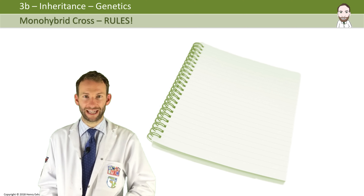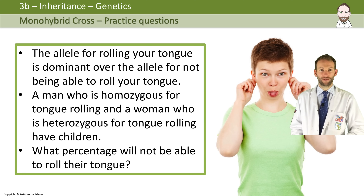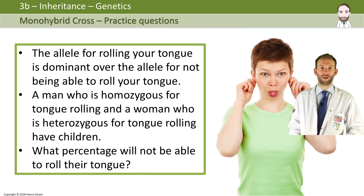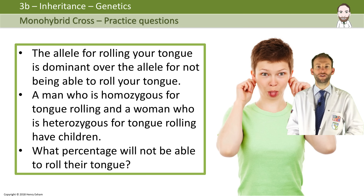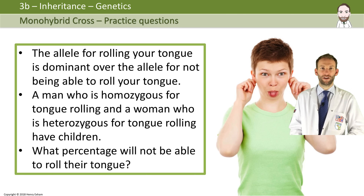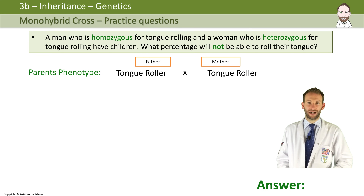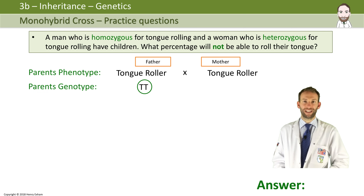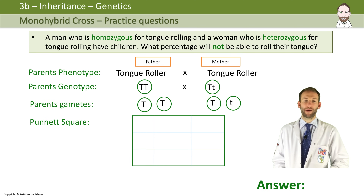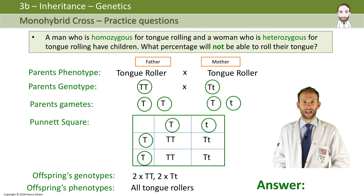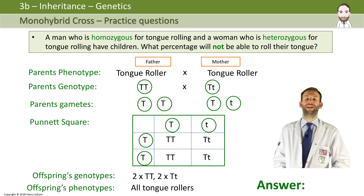Here's a practice question about tongue rolling. Tongue rolling is dominant. A man is homozygous for tongue rolling and a woman is heterozygous for tongue rolling. They have children — what percentage will not be able to roll their tongue? The man is homozygous, so both tongue rollers is their phenotype. We'll use capital T. He's homozygous so he's got both big Ts, and she is heterozygous. We put them into gametes and into our Punnett square and match them up. We can see that 50% — two out of four — are going to be homozygous dominant tongue rollers, and two out of four are going to be heterozygous tongue rollers. So they're all going to be tongue rollers, meaning 0% will not be able to roll their tongue.